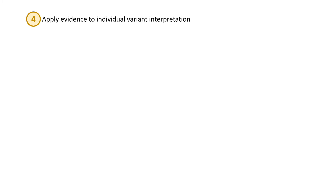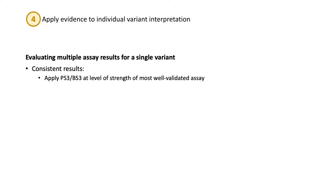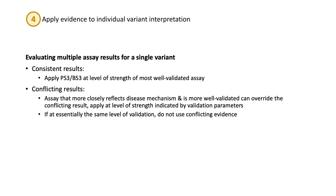Once the specific instance of an assay has been evaluated as a whole, the results from that assay for a given variant can be applied as evidence in variant interpretation. If the assay gives a functionally abnormal or functionally normal result consistent with the mechanism of disease, the PS3 or BS3 criterion can be applied at a level of strength based on the degree of validation determined in the previous steps. Variants demonstrating an intermediate level of impact on function merit special consideration, and review of the disease mechanism can help guide the appropriate level of strength. In the case of multiple functional assay results available for a single variant, consistent results should be used at the level of strength of the most well-validated assay. If the results are conflicting, the assay that most closely reflects the disease mechanism and is more well-validated can override the conflicting result, and evidence should be applied at the strength indicated by that assay's validation parameters. If the assays are essentially at the same level of validation, conflicting functional evidence should not be used in the interpretation of the variant.